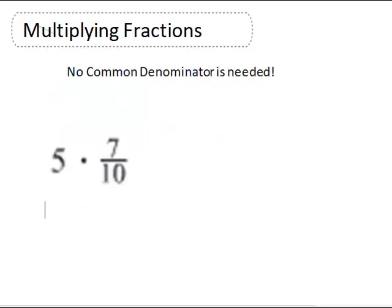5 times 7/10. This will be easier if we put a denominator on 5, because 5 can be written as 5/1. So 5/1 times 7/10. Now we'll look for common factors between numerators and denominators.